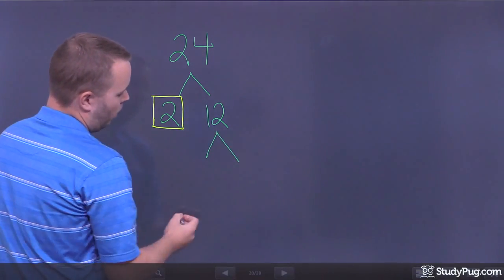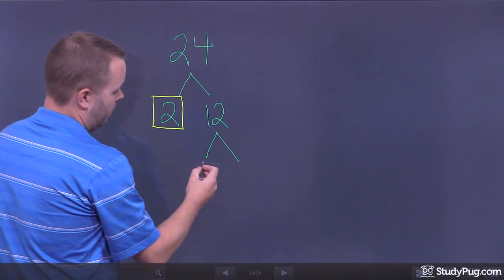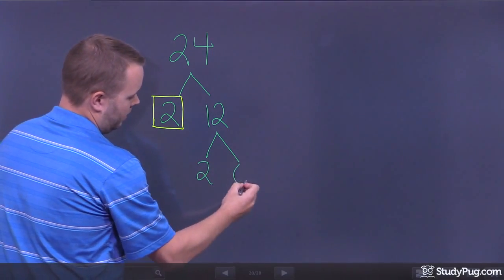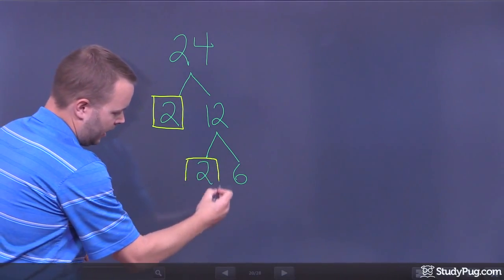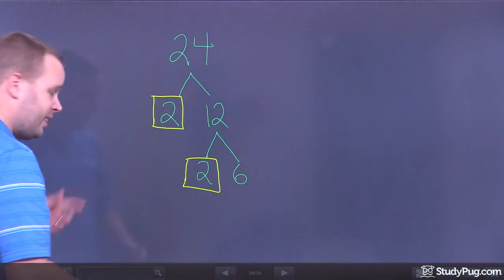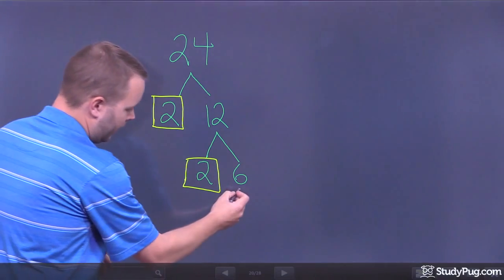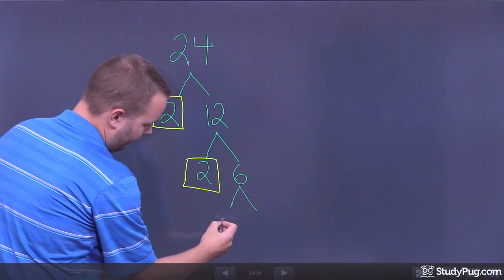What I can do though is break 12 down even further. Now, when I break 12 down further, let's use 2 again. And that's 2 times 6 to get 12. Once again, that's the end of a branch, but 6 can keep going. I can keep breaking 6 down because I can still find factors of 6.